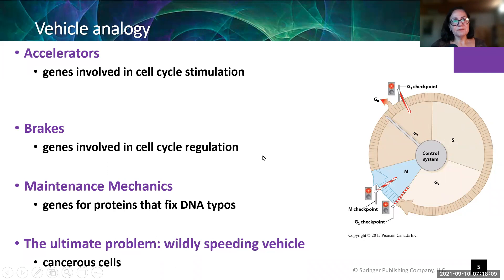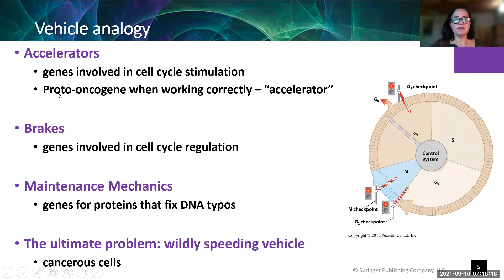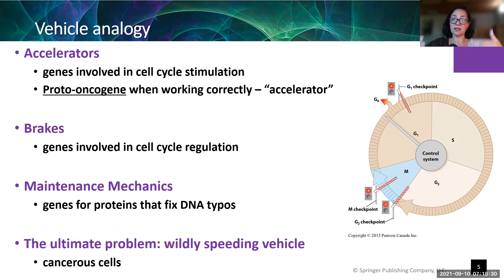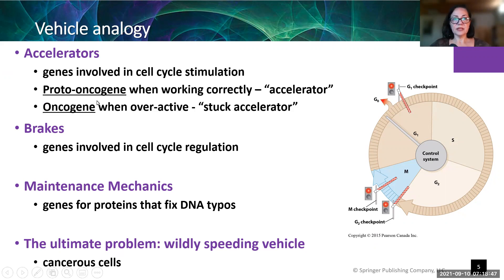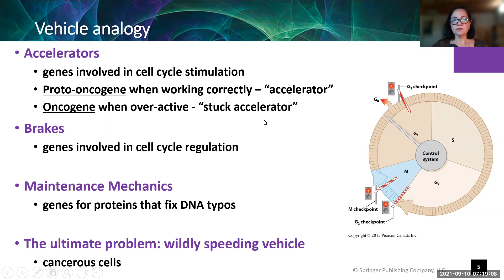Let's introduce some terminology about the genes that act as accelerators. When the gene is working properly, it's referred to as a proto-oncogene — think of these as properly working accelerators that advance the cell through the cell cycle at the appropriate time. Sometimes proto-oncogenes get mutated in a way where they inappropriately advance the cell through the cell cycle. When that happens, we call it an oncogene or activated oncogene — it's overactive, like a stuck accelerator where you lift your foot off the pedal but the car keeps accelerating.